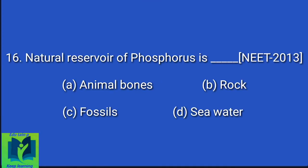The natural reservoir of phosphorus is: Option A: Animal bones. Option B: Rock. Option C: Fossils. Option D: Seawater. Answer: Rock.